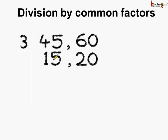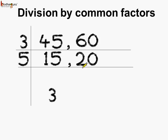As we can see, both 15 and 20 are divisible by 5, meaning 5 is a common factor of 15 and 20. So let us divide 15 and 20 by 5. 5 threes are 15 and 5 fours are 20.